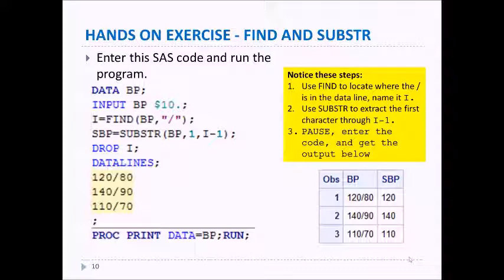Notice you're reading in some blood pressure values, 120 slash 80 and so forth. And what you want to do is you want to extract the 120, the systolic blood pressure, from this character value. So what you're going to do is first find out where the slash is using the FIND function and then call it I, and then use the SUBSTR function to extract from character 1 through I minus 1. And therefore, you're going to capture the values that are the systolic blood pressure. So pause here, enter this code, and get it to run, and then return.